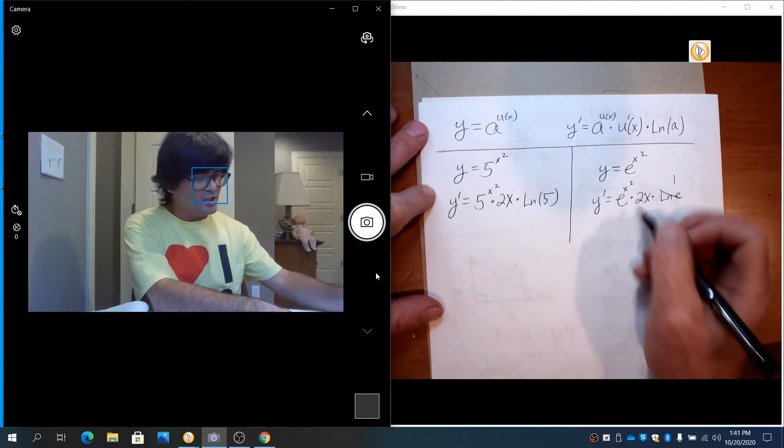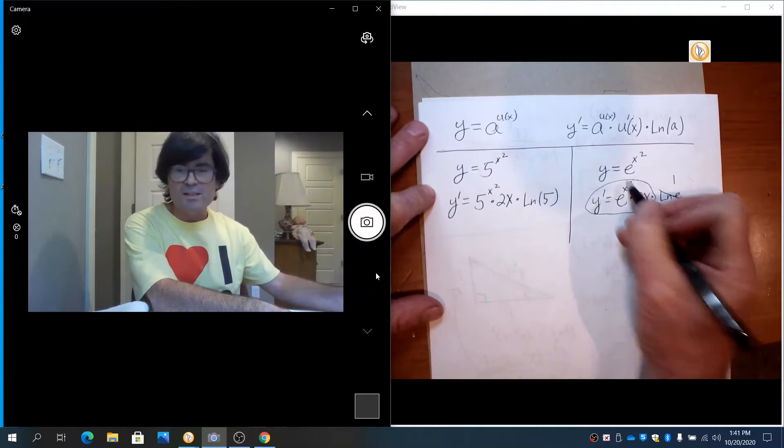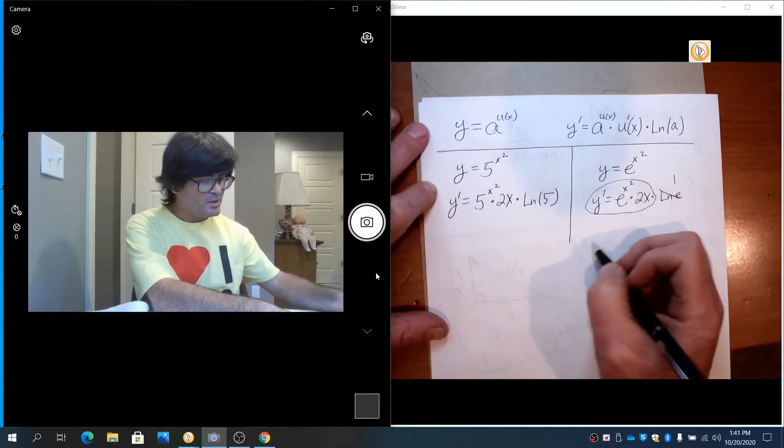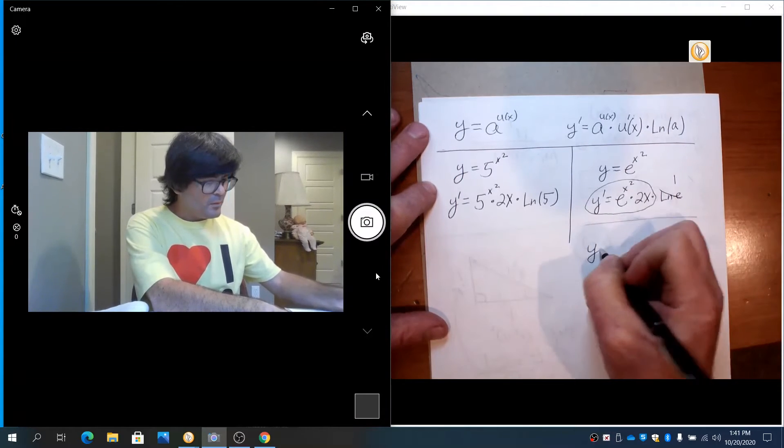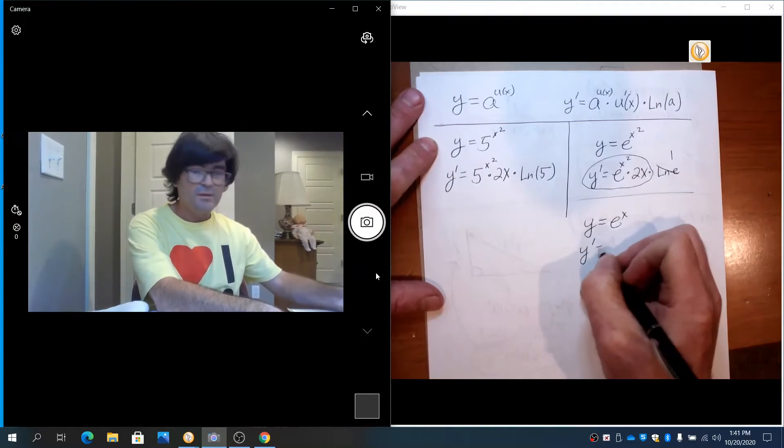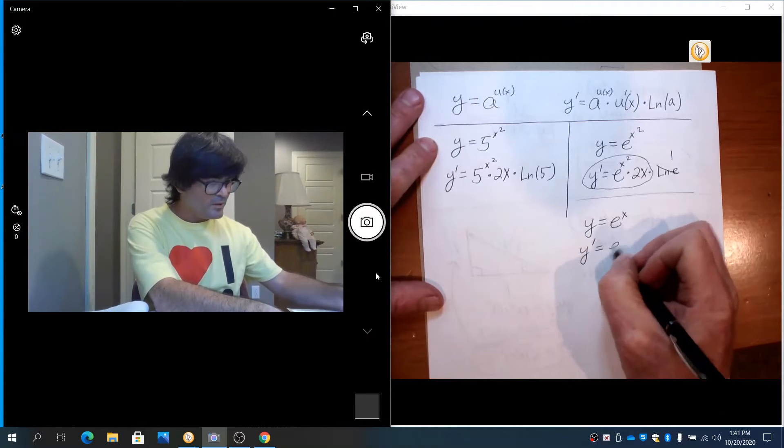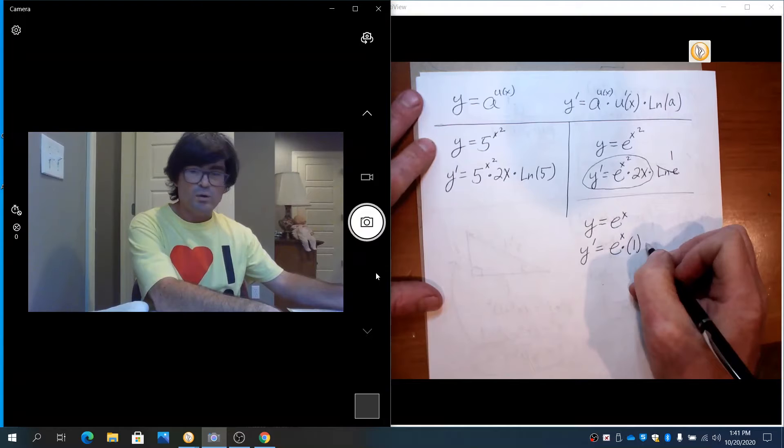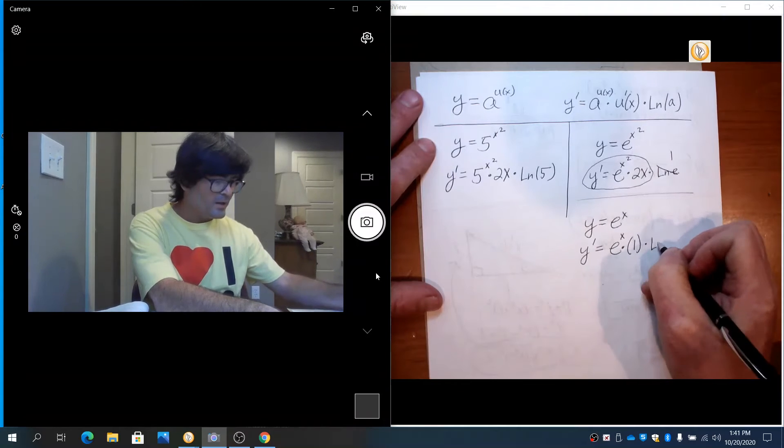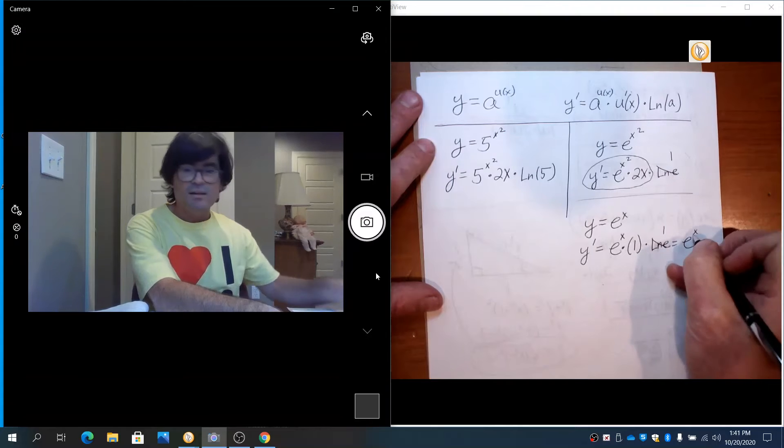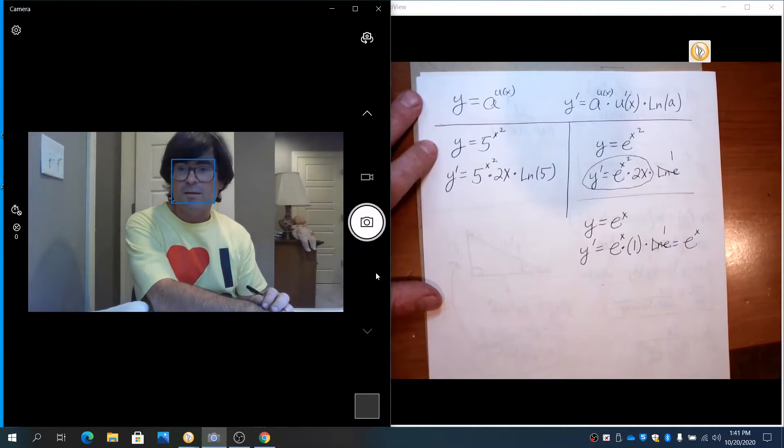So again, if you have a base of e, things are a little easier. Let me show you a kind of special example. y equals just e to the x. The derivative for that is the original written again, multiply by the derivative of x which is 1, and then multiply by that natural log of e which is just 1.